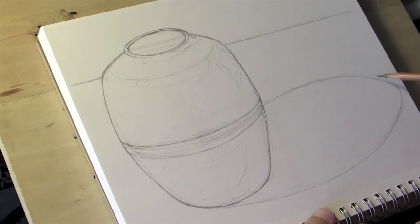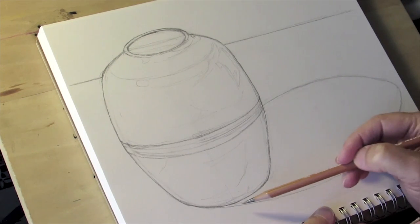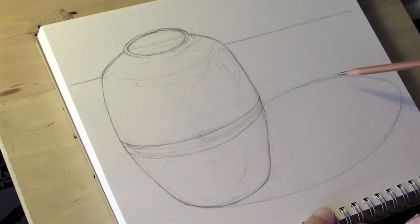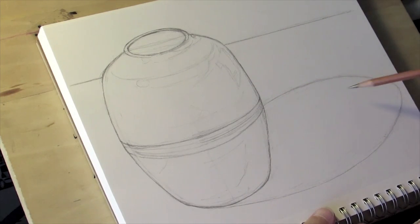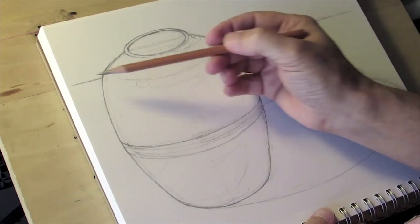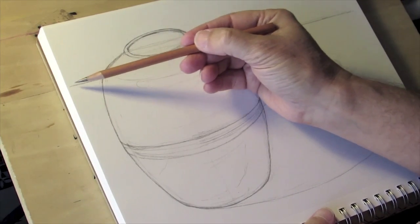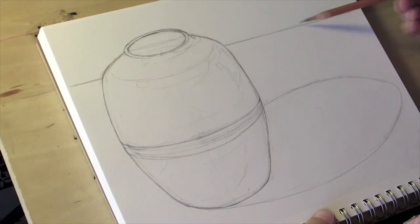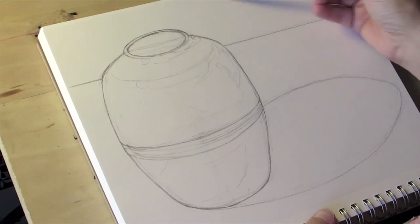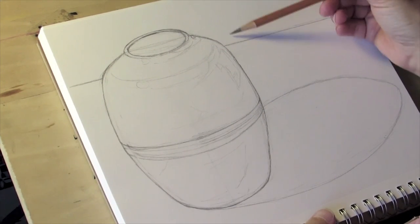And then finally, I very lightly put in a general shape for the cast shadow that comes from the ceramic pot onto the table surface. And I put in a horizon line in the background where the edge of the table plane meets the vertical plane of the wall.